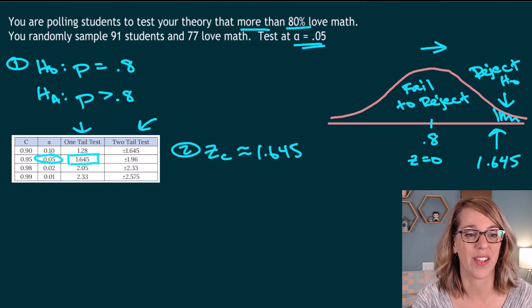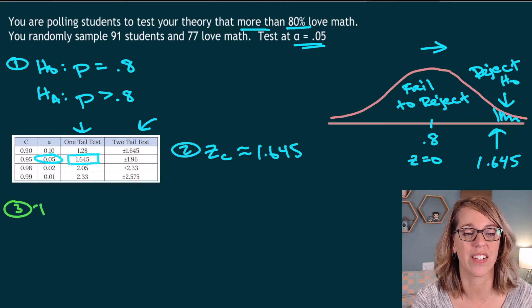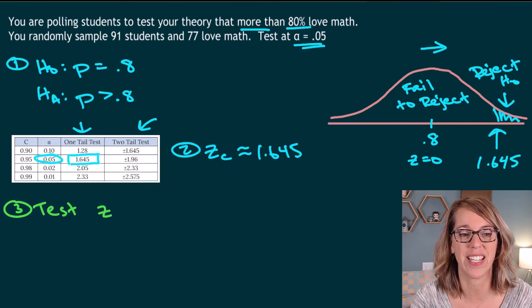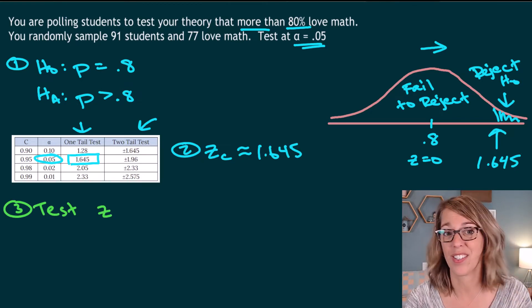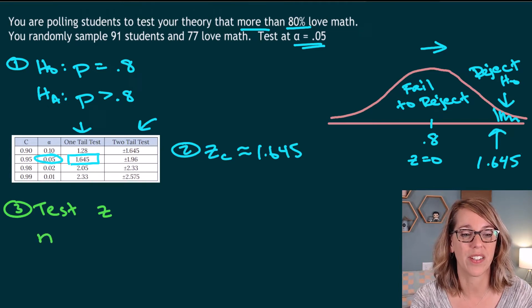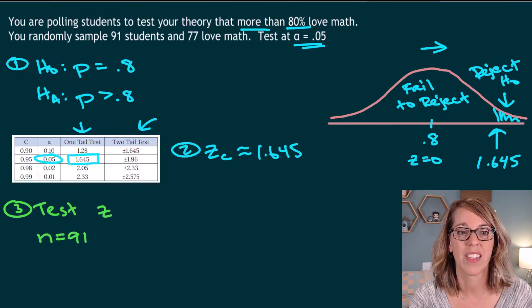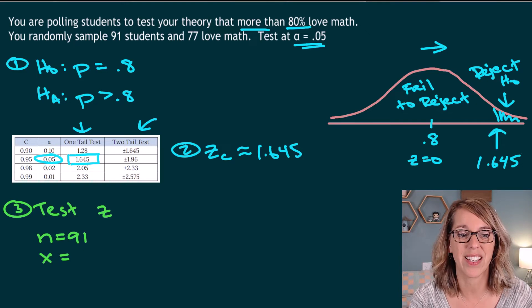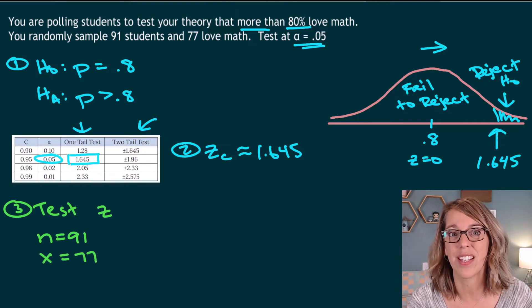We're going to find that test value. So step number three is to find the test Z score. So we're going to look for that test Z and I'm going to use my test results, my sample results. We were given a sample of 91. So N is equal to 91. A success rate, X is equal to 77 students that did love math.